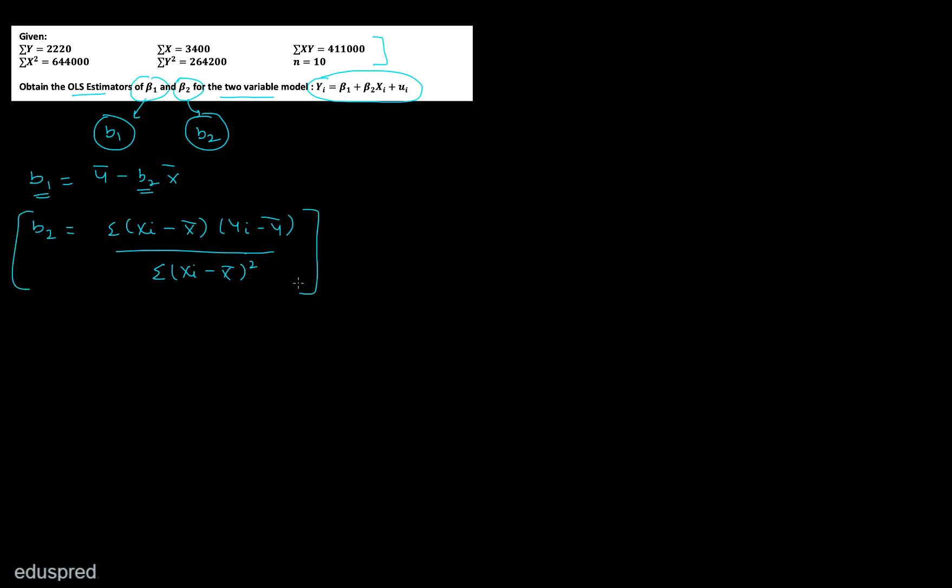Now note that there are various formulas to calculate the value of B2. Generally speaking many students remember this formula but in this case you cannot use this formula directly because the information given to you is not in this particular manner. They have not given you the value of the denominator or numerator directly. So we are not going to work with this formula. We are going to work with the other formula that we have for B2. So the other formula is summation of xi yi minus n x bar y bar in the numerator, and the denominator is summation of xi squared minus n x bar squared.